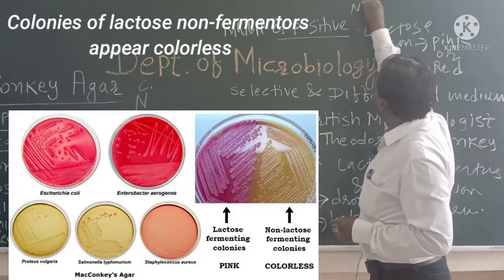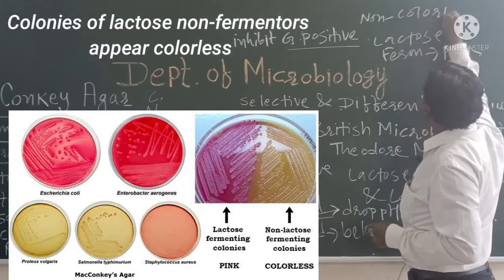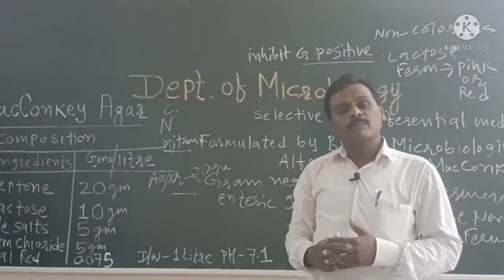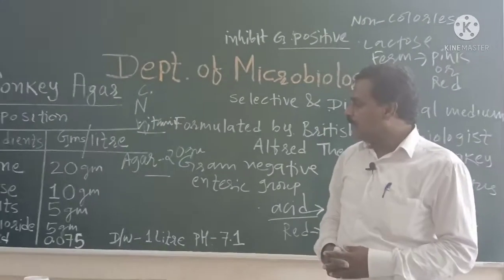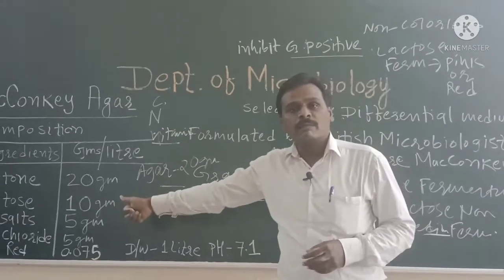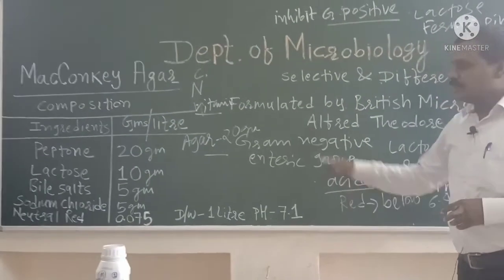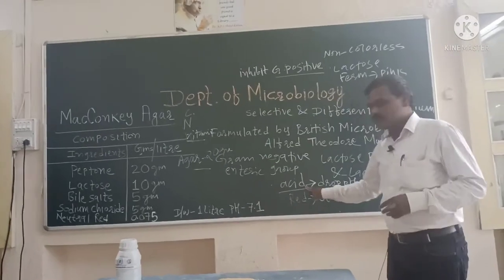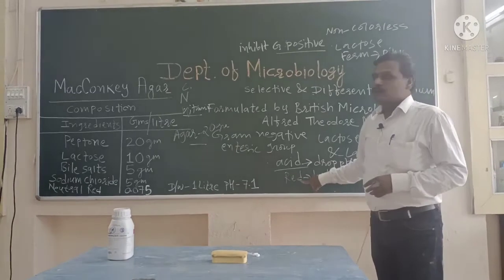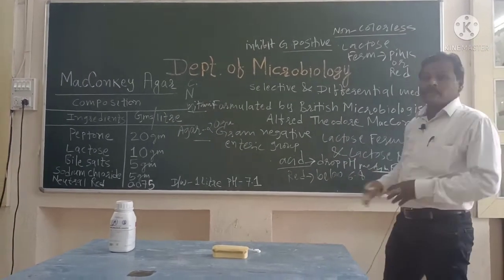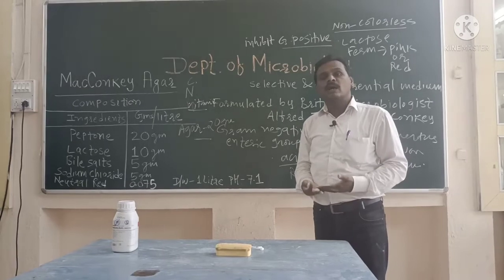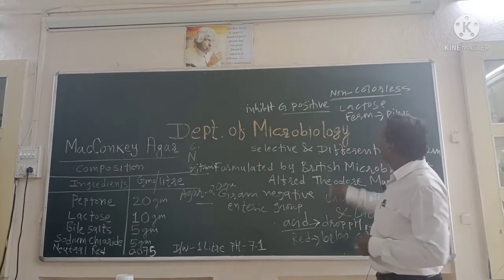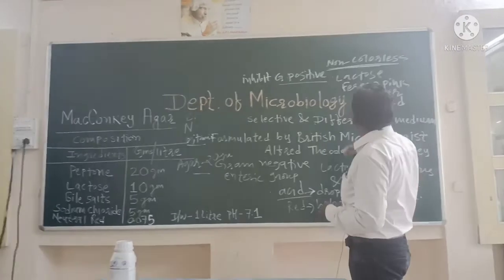The colonies of lactose non-fermenters appear colorless. Lactose fermenters appear pink or red because they ferment the lactose sugar in the medium, produce acid, and the neutral red pH indicator turns red at pH 6.8. Lactose non-fermenters, as they do not ferment the lactose sugar, produce no pink or red color, so these lactose non-fermenters appear colorless.